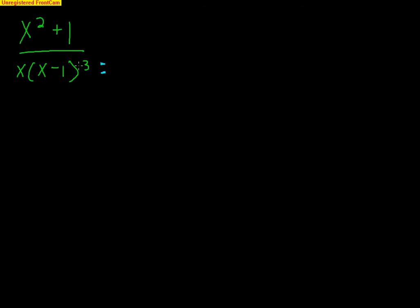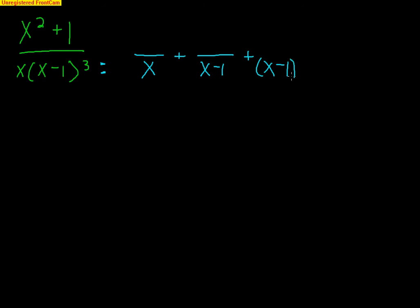This next one is also a repeated linear fraction. We can't factor it out anymore, so we leave it as is. We're going to see that we get four different fractions this time. X is by itself, so it gets its own linear fraction. Then we get (x − 1), (x − 1)², and (x − 1)³. For a linear factor, you get one fraction for each exponent.